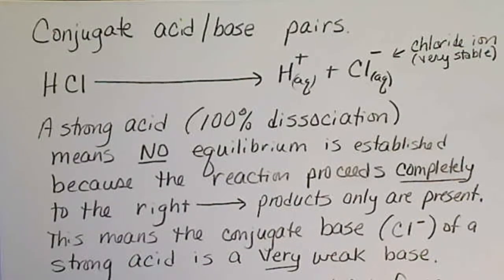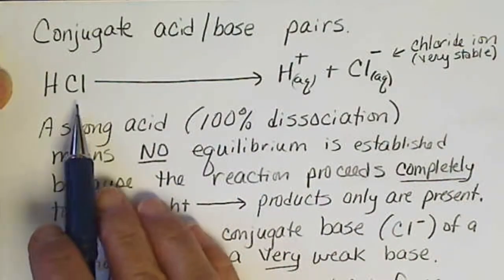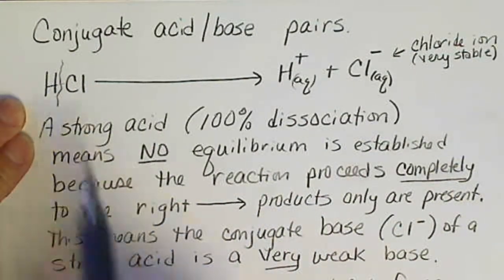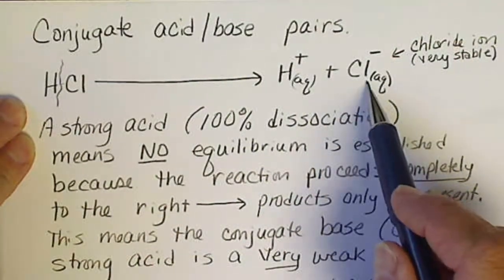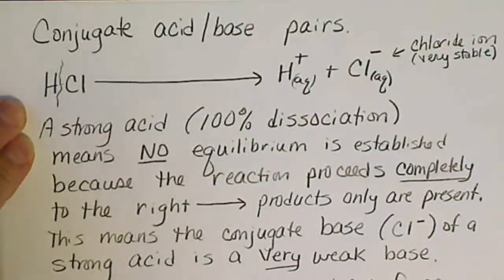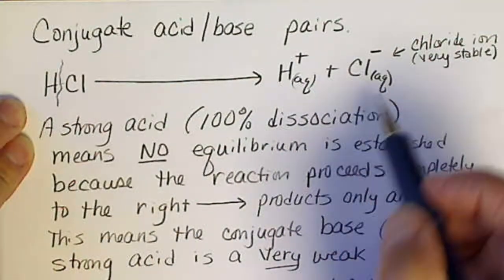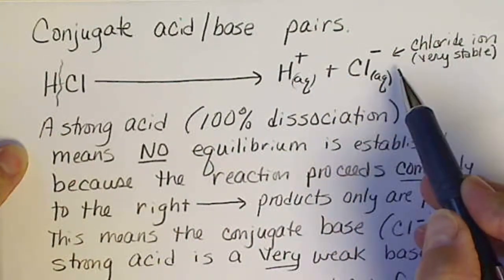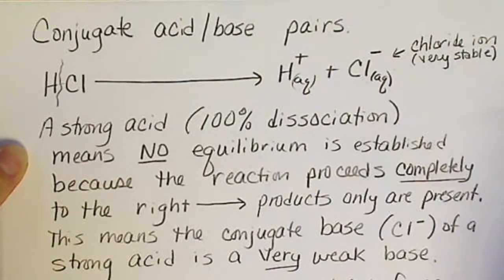Starting with the strong acid hydrochloric acid: this strong acid breaks so that hydrogen's electron goes with chloride. This reaction proceeds all the way to the right, and the chloride ion is in solution as well as the hydrogen ion.